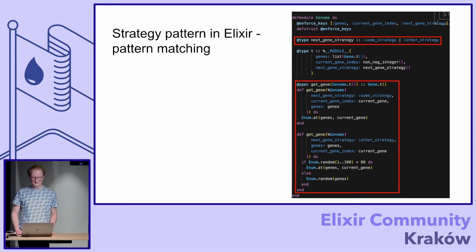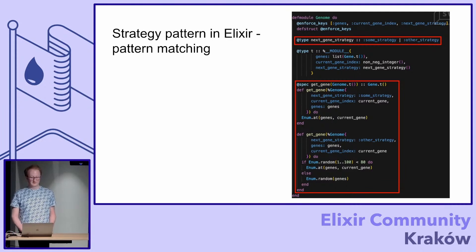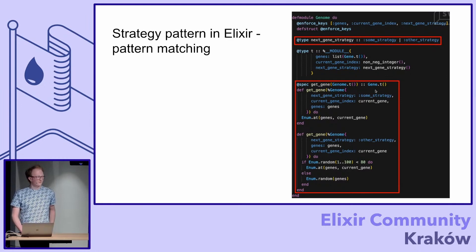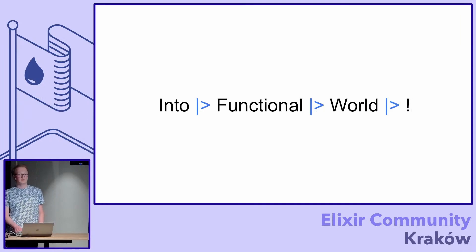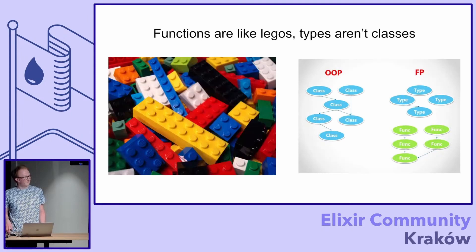But there is a more Elixir way to do that with pattern matching. You can actually have multiple functions which match based on the type that you defined. With the strategy being placed inside the object, you can call these functions, match on them, and execute the proper algorithm. But with that type definition and pattern matching, we get a little bit into the functional world.